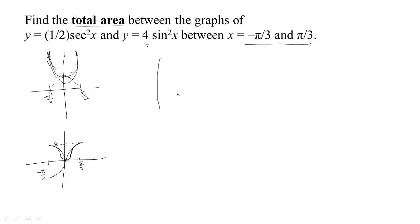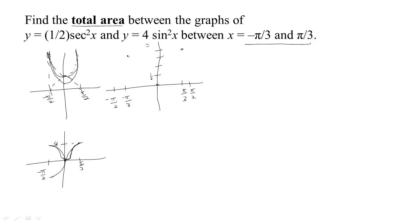Putting both graphs together from -π/2 to +π/2, we're actually only going between -π/3 and +π/3. At the origin, ½sec²x is up at ½ and 4sin²x is at 0. By π/3, the cosine of π/3 is ½, so cosine squared is ¼, so the secant squared is 4, and ½ times 4 means the function climbs up to the level of 2.